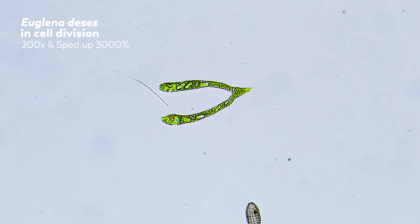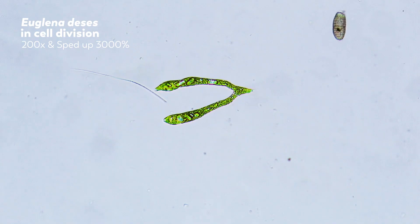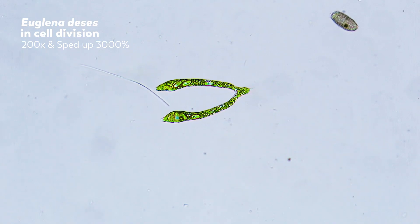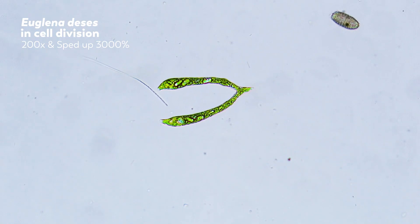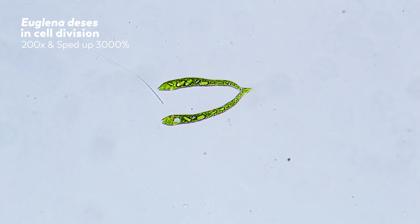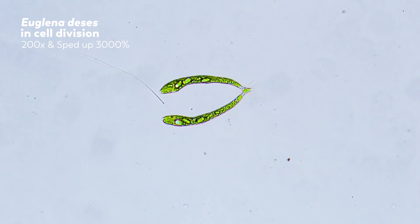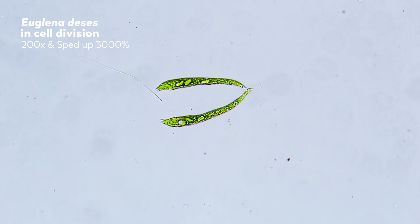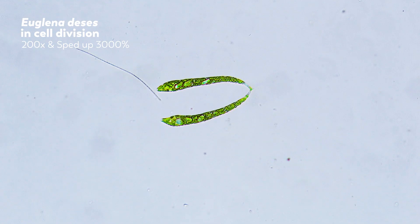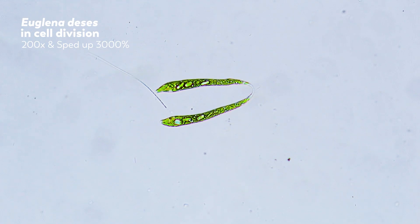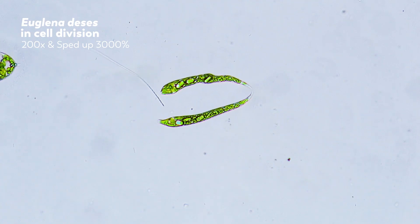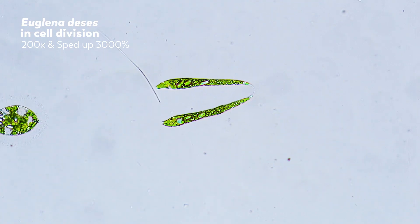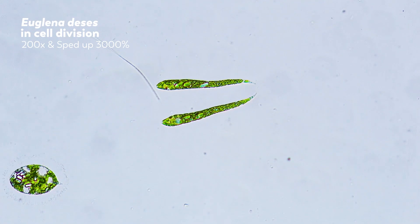The process of binary fission happens fairly quickly, all things considered, but of course we have to speed up the tape a bit for you to enjoy it. Here, a photosynthetic flagellate called Euglenides is dividing. The nucleus has already divided, and each of these halves has its own control center, even though the cytoplasm is still joined. Which makes you wonder — are these two separate organisms now, or are they only individuals once their membranes separate?